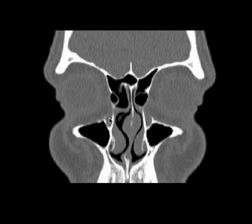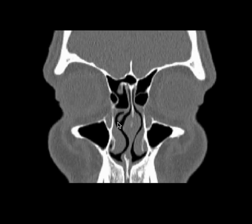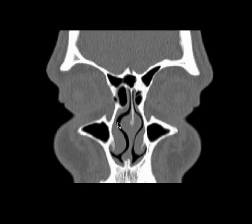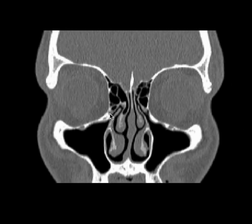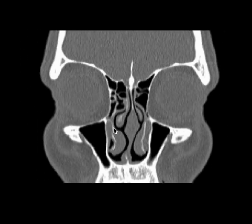What you see over here is the nasolacrimal sac and duct. I am going to scroll anterior and posterior. See this — can you see the whole segment coming, flowing up and down? That is the duct. It starts from here and it opens here under the inferior turbinate.